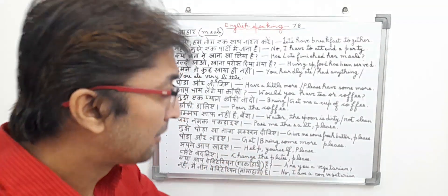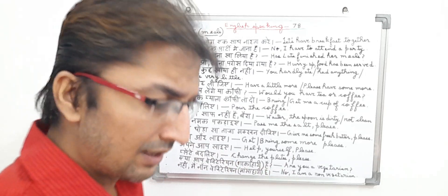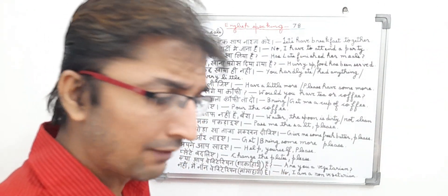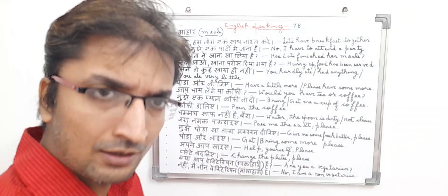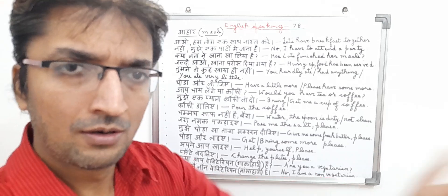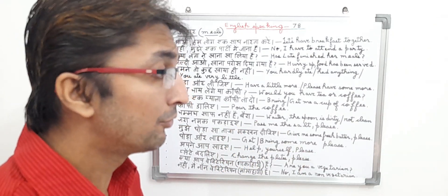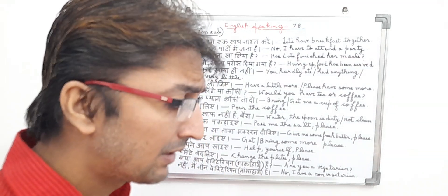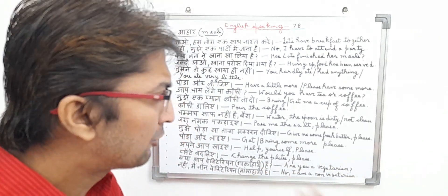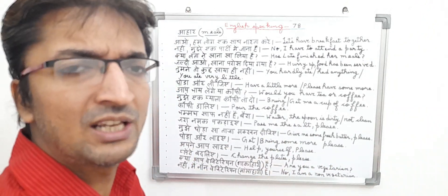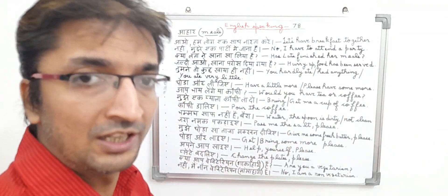Chamach saaf nahi hai, bera. In English, it means 'Waiter, the spoon is dirty, not clean.' The sentence basically means the person has seen that the spoon is dirty and is saying to the bera — meaning servant or waiter — please clean the spoon. We normally see this when we go to a hotel or restaurant. In English, it means 'Waiter, the spoon is dirty, not clean.' It is a present type, meal type sentence where the person is ordering the waiter to clean the spoon.